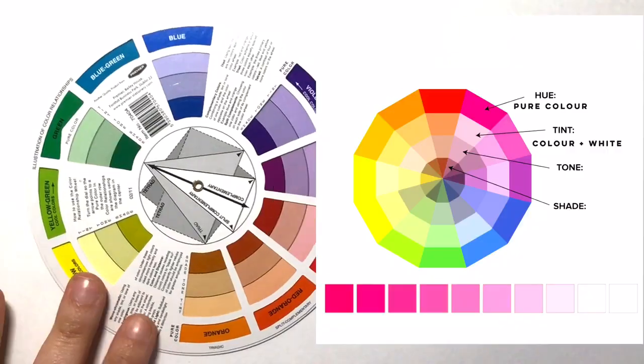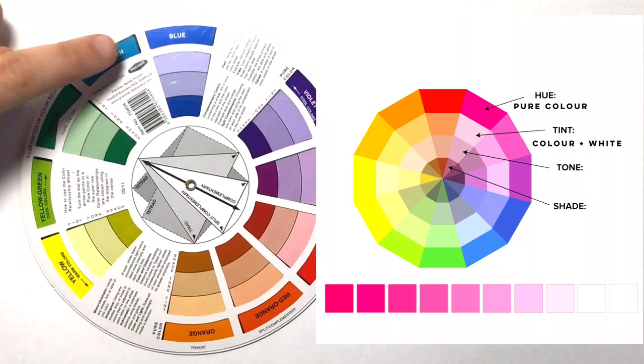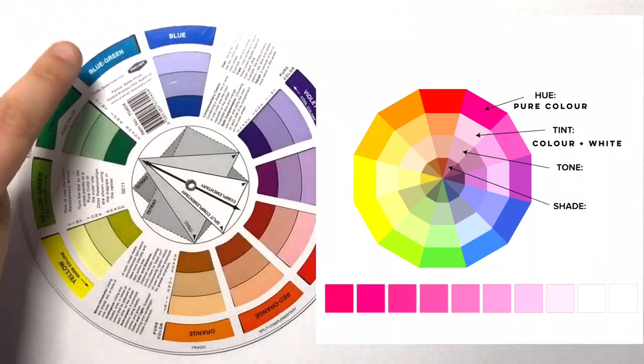So let's start with tints. You create tints when you add white to a hue. Now remember, a hue is just the pure, fully saturated colors that you find on the edge of the color wheel.